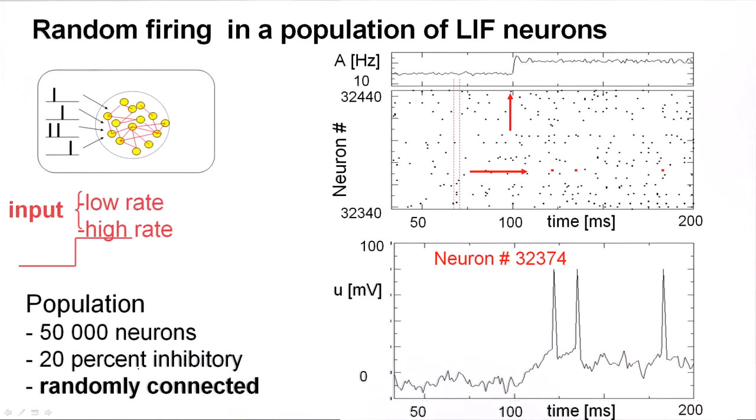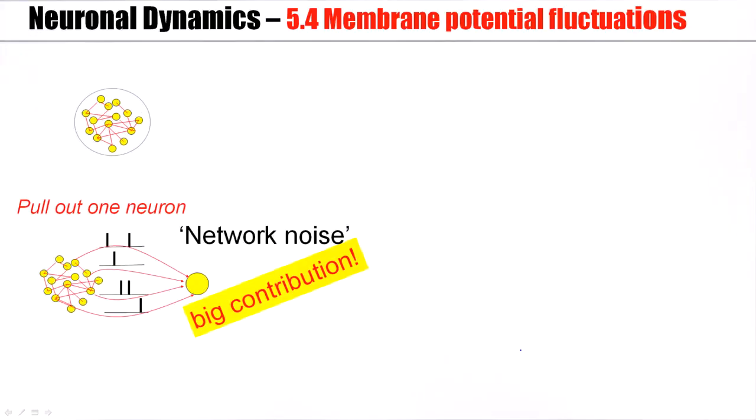We have seen that fluctuating membrane potentials can be observed in a randomly connected network of leaky integrating fire neurons. Let's now take one of the neurons. We have here our big network of neurons. Let's just arbitrarily pick one of the neurons, say this one here. And say this is my special neuron. I will consider the input to this neuron.